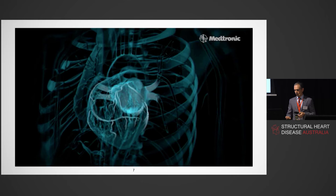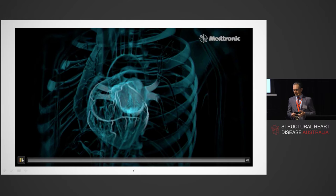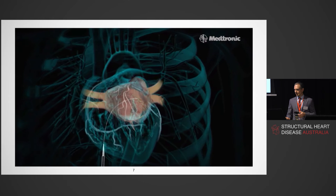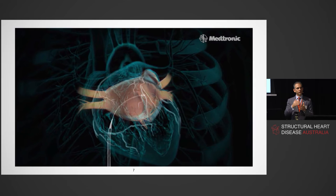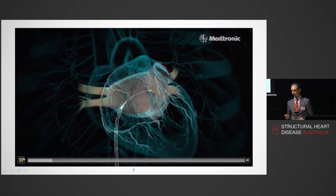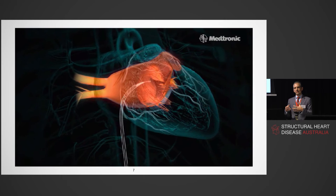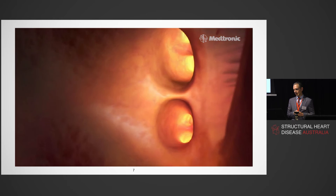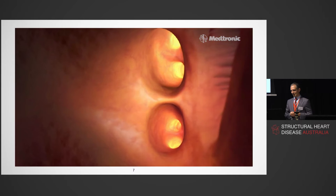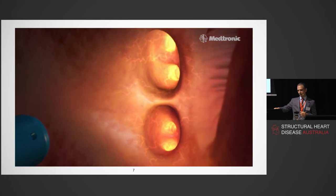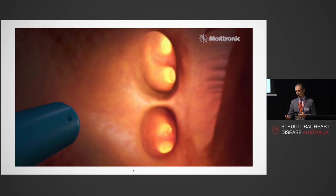We approach from the right femoral vein with a sheath up to the right atrium, crossing into the left atrium via a needle — the transseptal puncture. We then reach the pulmonary veins; you can see lightning bolts representing electrical activity emerging from them. A circular mapping catheter maps that activity inside the pulmonary veins.